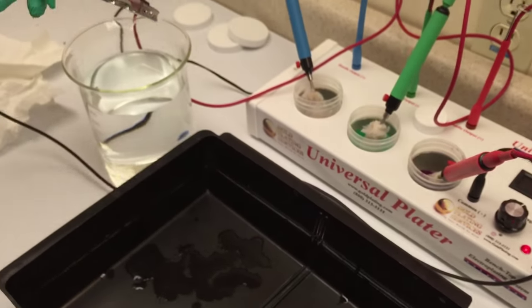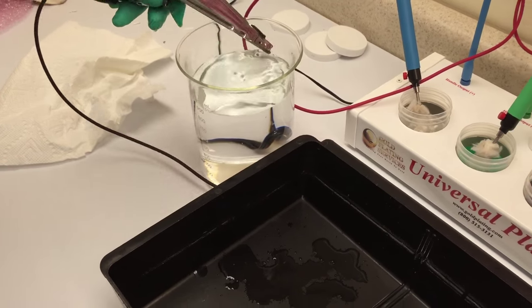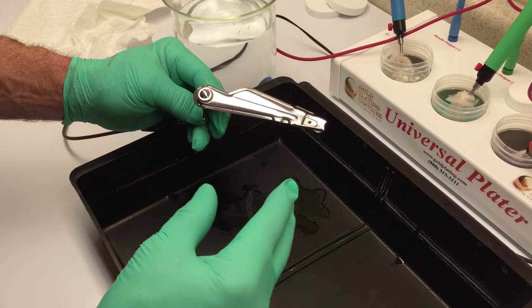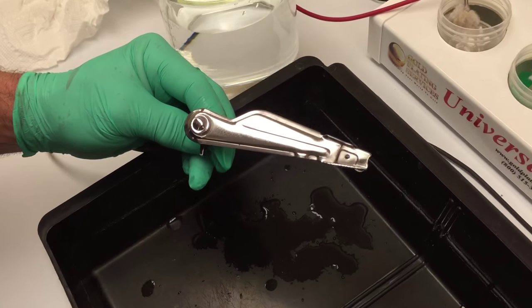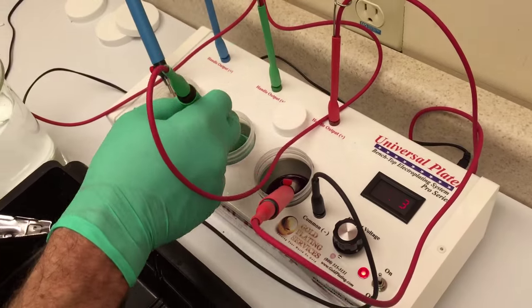Now for rinsing, I've just got a beaker with some distilled water here, so I'll rinse the part off. Now we've got our part—there's no water breaks on there, the water sheets off, it wets out very well. Next I'm going to leave the voltage at seven volts, and I'm going to grab the handle with the wood's nickel strike solution.